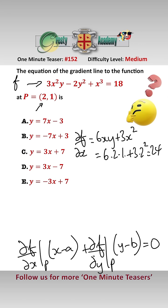And df/dy is equal to 3x squared minus 4y, which at the point P(2,1) equals 3 times 2 squared minus 4 times 1, which equals 8.